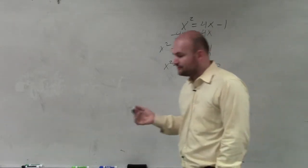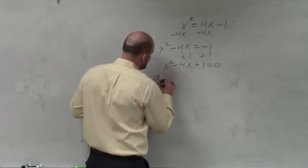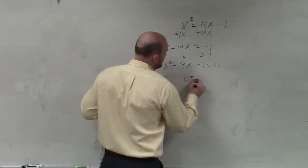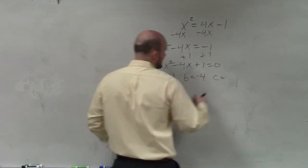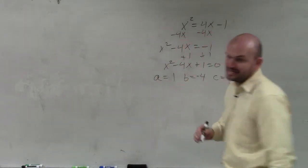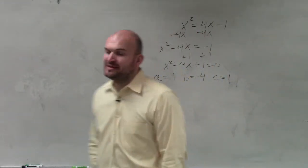So now, ladies and gentlemen, the first thing we want to do when we're solving a problem like this is, just like we did before, identify what A is, what B is, and what C is. A in this case is 1. B in this case is negative 4. And C in this case is 1. So you identify what A, B, and C is.